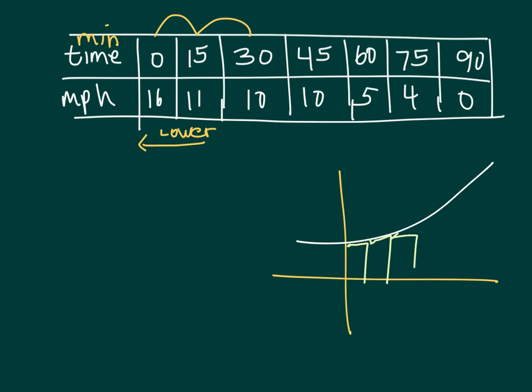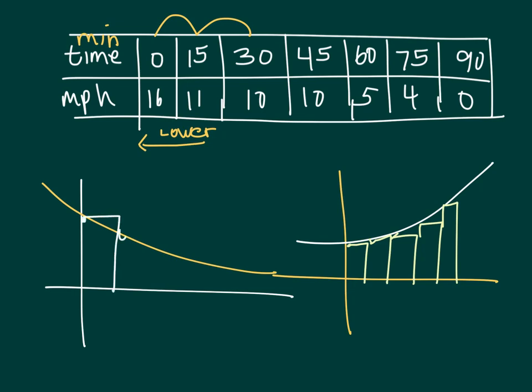But if I have a function that is decreasing, notice what happens when I draw my rectangles to the left - actually that's an upper estimate. So if I pick that first value at zero and it's going down, that's going to be an upper estimate. So you have to be careful with these.